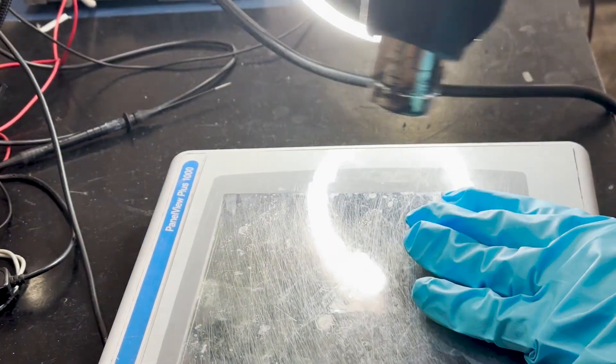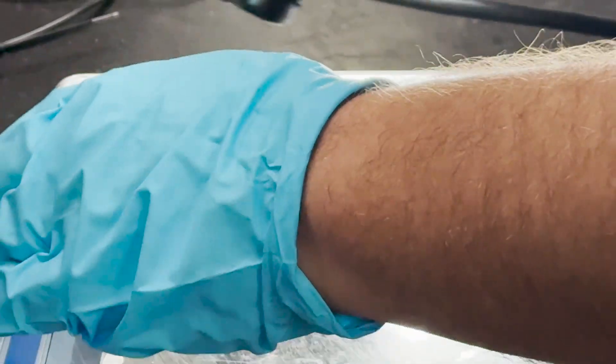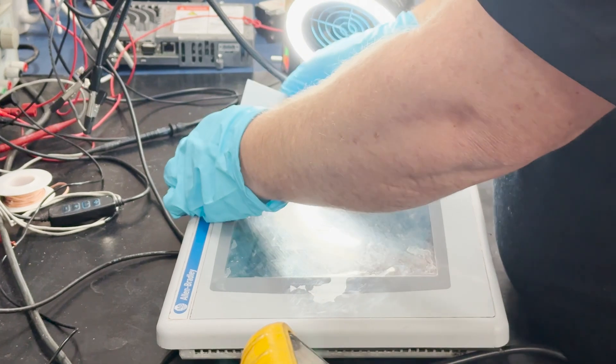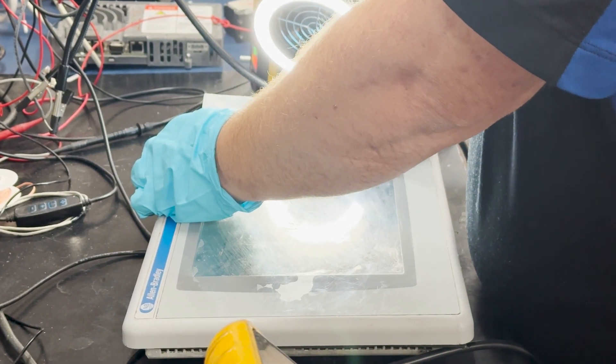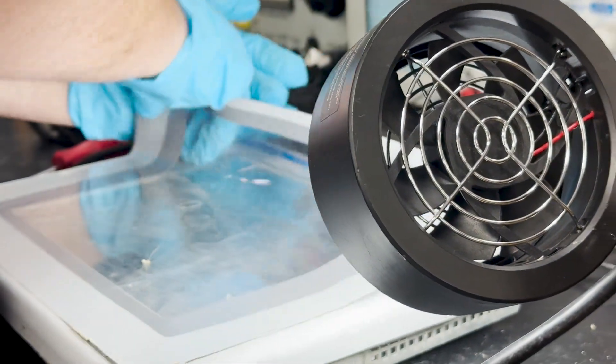To initiate the repair, we will carefully apply heat from a heat gun to the front adhesive layer. This thermal application will weaken the adhesive bonds, facilitating the removal of the layer and enabling us to proceed with the repair procedure.